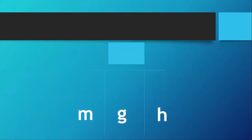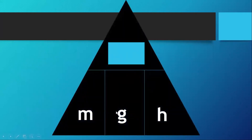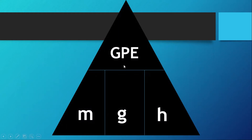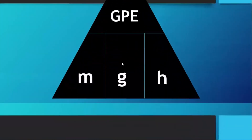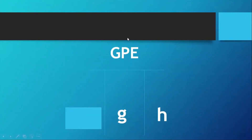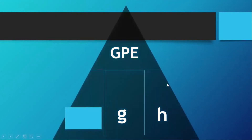Using a triangular formula: if the potential energy (GPE) is missing, multiply mass by gravity and then by height. If mass is missing, divide the GPE by the product of gravity and height — you must multiply gravity and height first, then divide the GPE by that product. This gives you the mass of the object.